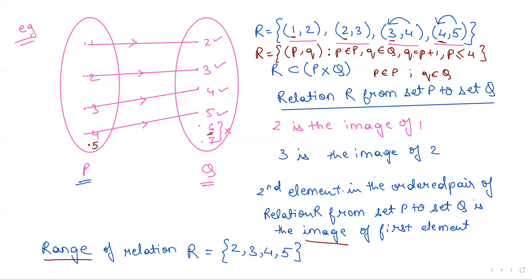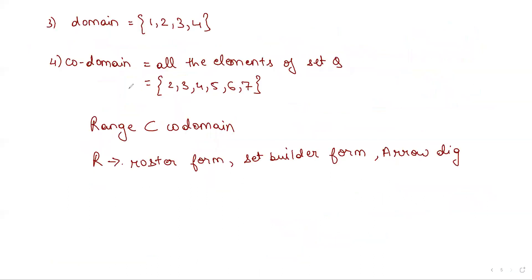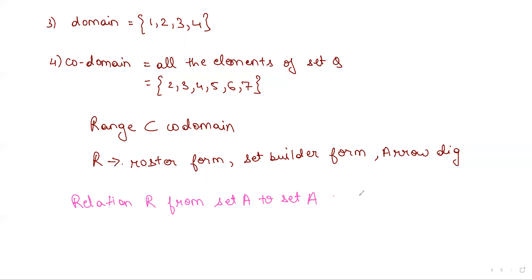The last point is that the relation R from a first set to a second set is sometimes also represented as a relation on P. It is just a notation you'll find in questions. Instead of two different sets, if we have the same set — from set A to set A — then this can also be represented as a relation on A. That means A cross A is the Cartesian product being considered, and your relation R is a subset of this Cartesian product A cross A.